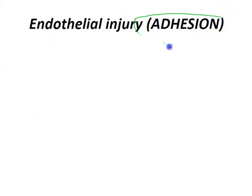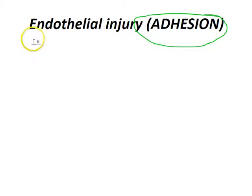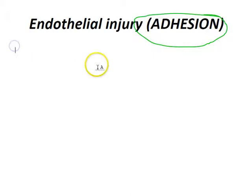So we have endothelial injury, then adhesion. When platelets bind, that activates them to release their granules. Platelets have different kinds of granules, which contain key elements: thromboxane A2, ADP, calcium, and serotonin.